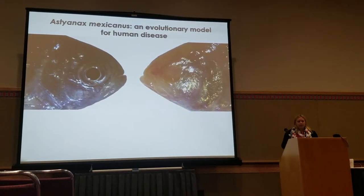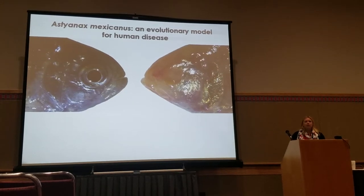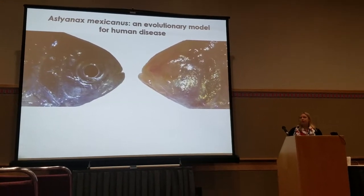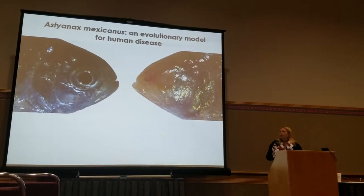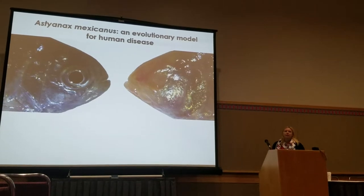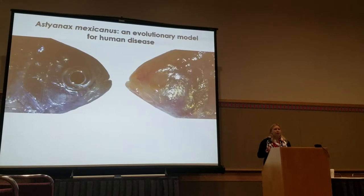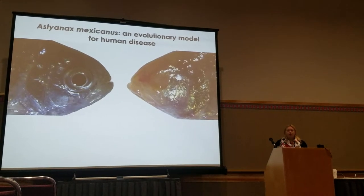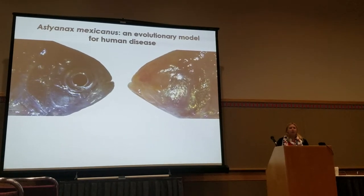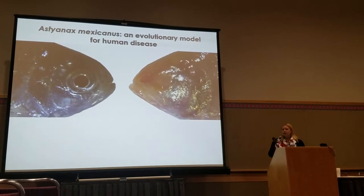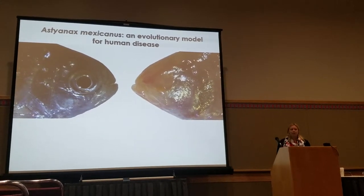The system we work on is Astyanax mexicanus. Within the same species, we have two very different looking fish — a surface-dwelling fish found in rivers surrounding cave networks, and many populations of cave fish that we're able to study. This being a comparative biology session, we compare between these two very closely related fish to try and understand how evolution is occurring.